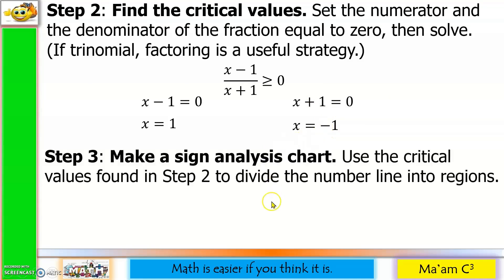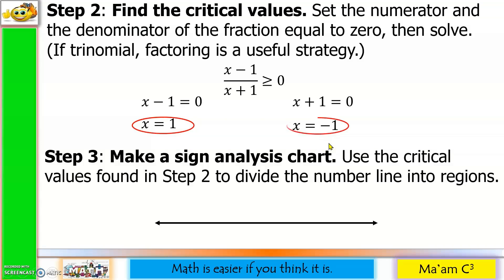Step 3: Make a sign analysis chart. Use the critical values found in Step 2 to divide the number line into regions. We have two critical values: x equals 1 and x equals negative 1, so we use two tick marks. Negative 1 is on the left of positive 1. The critical values divide the number line into three regions: region 1, region 2, and region 3.